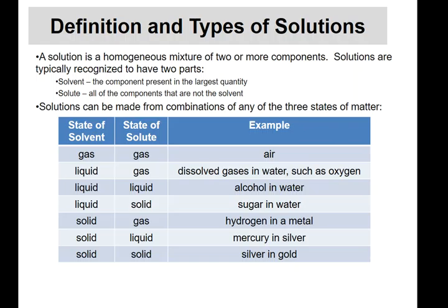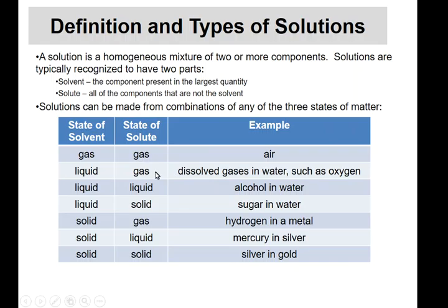Since we have three states of matter, there are different ways these things can go together. A gas dissolved in a gas — an example is air, which has nitrogen, oxygen, argon, carbon dioxide. A liquid solvent with a gas solute — this can be oxygen dissolved in lakes and ponds that allows aquatic life to live, or soda pop where carbon dioxide is dissolved in liquid.